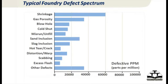The first step is to start tracking your rejections in PPM instead of percentages. One percent sounds very good, but if you say ten thousand PPM it starts sounding bad, and you start doing something about it.